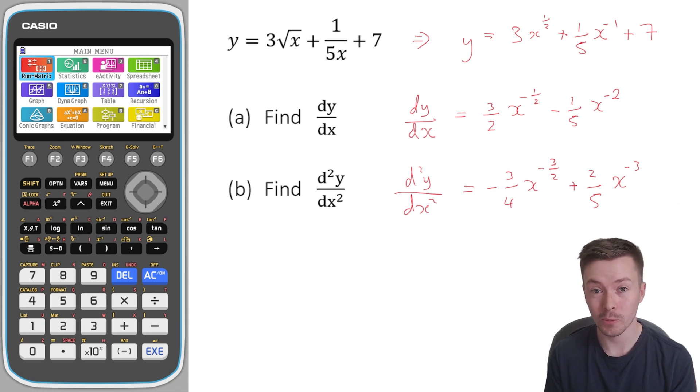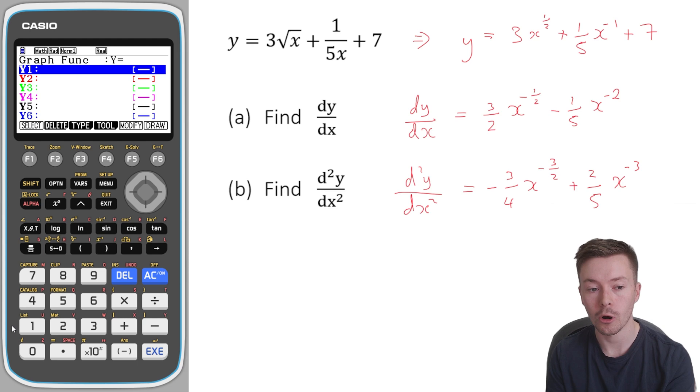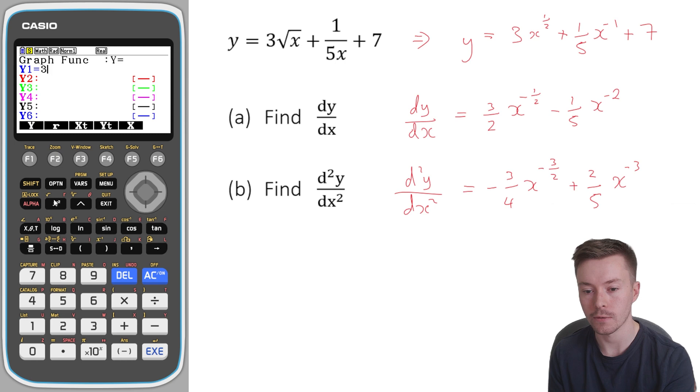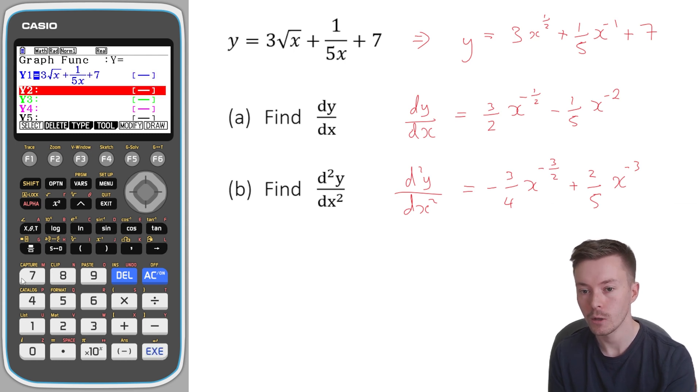Now the bit which most of the people watching this are probably interested in is how do we use the calculator to check that these differentials are correct. The first thing you want to do is go into the graph function. So I'm going to go down to graph. Press execute. From there, what I'm going to do is I'm going to type in my original function. I want to show you that there's no trickery here. There's no sorcery. I want you to type in the original function, not the one in index form. So I'm going to type in three and then I'm going to type in shift and then x squared. It's going to be the square root. And x. Press right to get out of my square root symbol. Plus and then fraction one over five x. And then press right again. Plus seven. That's my original function. Execute.